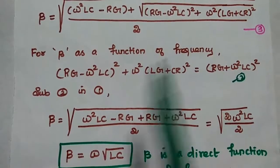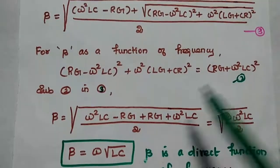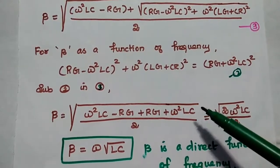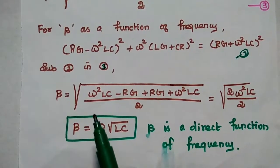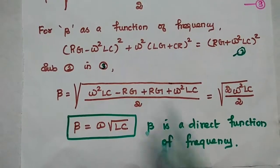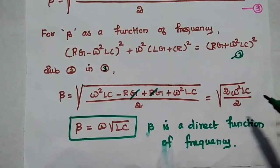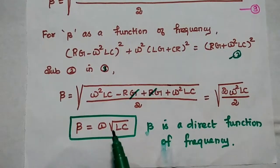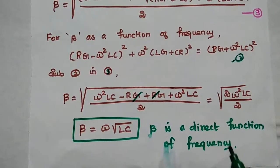Now we substitute the second equation into the third equation, replacing the square root term with rg plus omega squared lc, whole squared. Square and square root cancel. Then beta equals the square root of omega squared lc minus rg plus rg plus omega squared lc, divided by 2. Cancelling these two terms, we get 2 omega squared lc divided by 2. The answer is beta equals omega into square root of lc. Here, beta is a direct function of frequency.